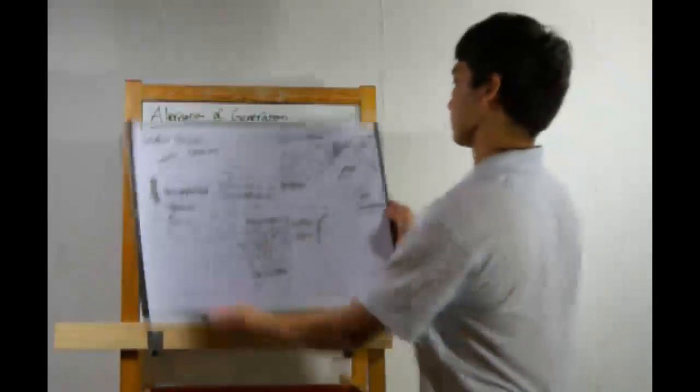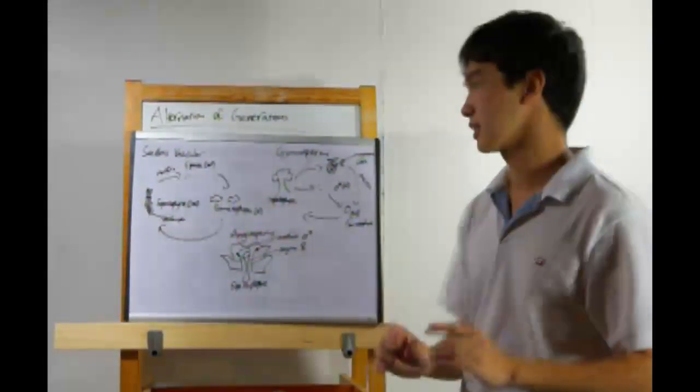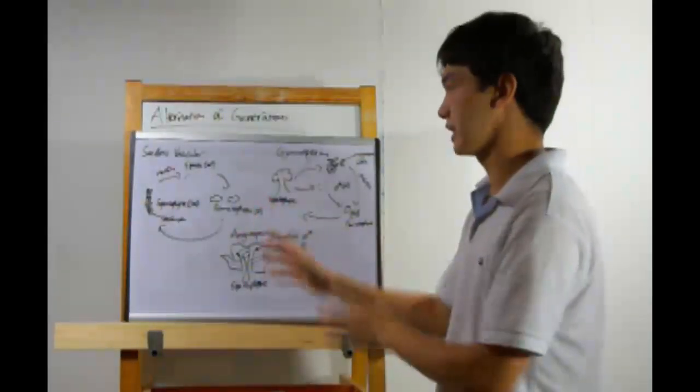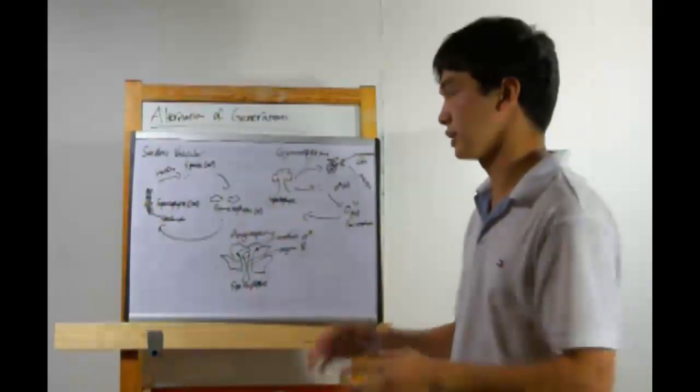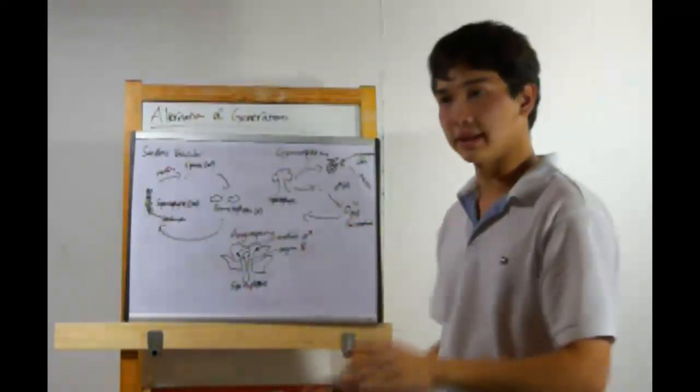Let's look at seedless vascular plants, the next evolutionary step up. These still need water to reproduce, but the sporophyte generation is now the dominant generation. What you think of as a fern or a horsetail, that is the major generation.